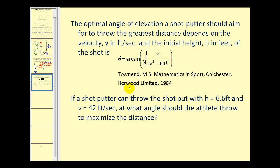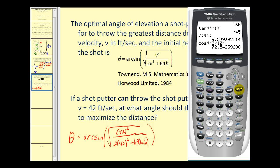So essentially, we're going to just do some substitution here, and then evaluate the arcsin. So again, our velocity is 42 feet per second, so we have 42² on here, and we have 2 times 42², plus 64 times the height, which is given as 6.6. And remember, all of this is underneath the square root. So let's see if we can do this on our calculator. Careful, we can do this all in one step. So second sine,